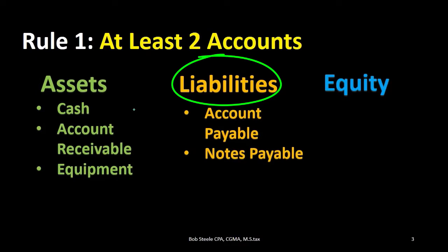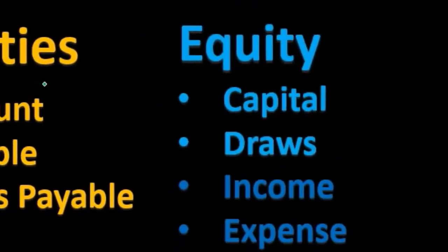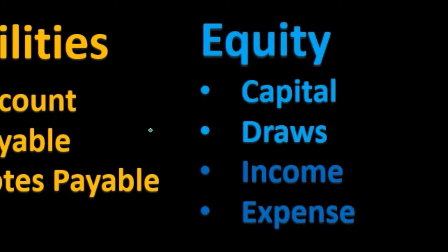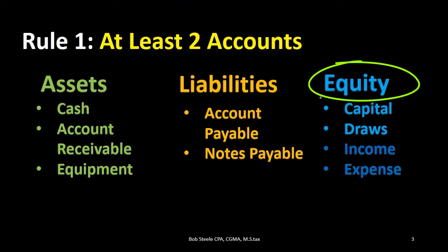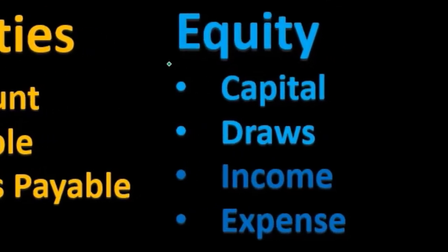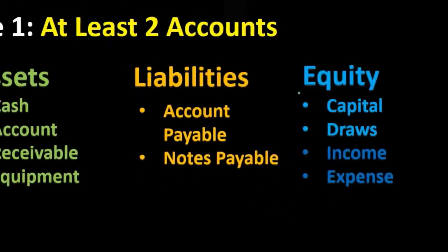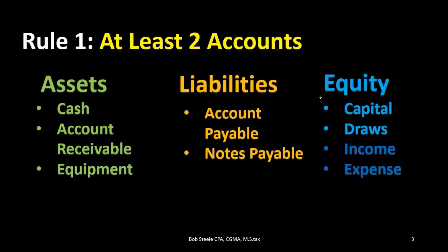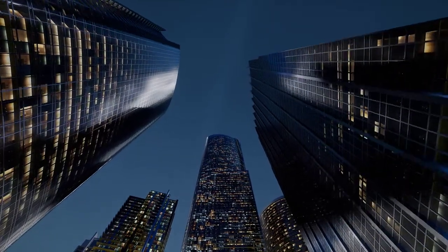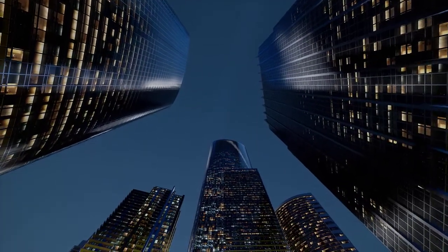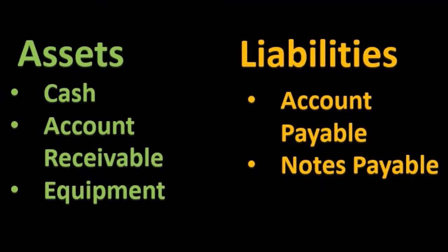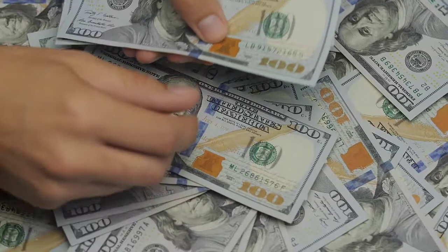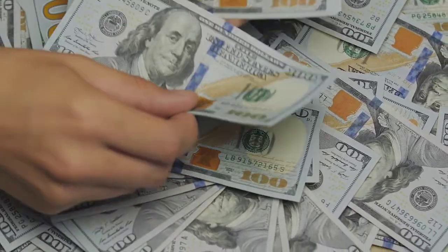For liabilities, we typically have accounts payable and notes payable as the primary accounts when first starting to record transactions. Under equity, we have the capital and the draws and the entire income statement, including revenue and expenses. Equity could be represented as owner's equity for a sole proprietor, partnerships equity for a partnership, or stockholders' equity for a corporation. The total equity section represents the book value or net value of the company. For a corporation, the capital account includes retained earnings and common stock, and draws are similar to dividends. The entire income statement is part of the equity section.